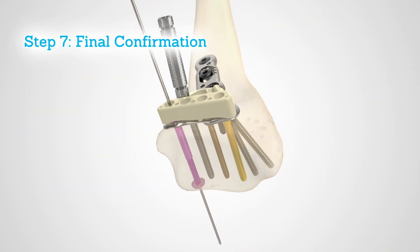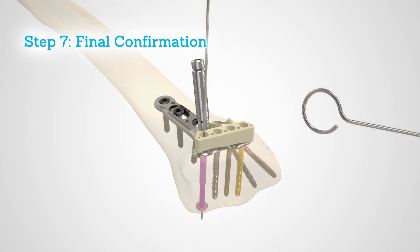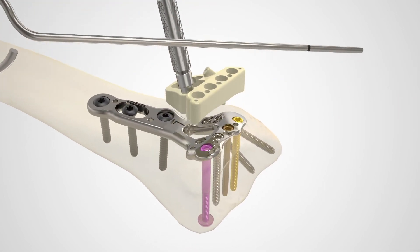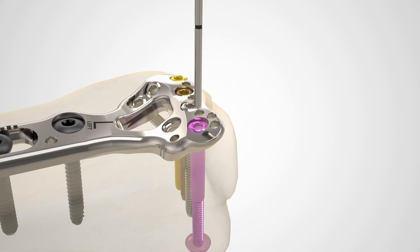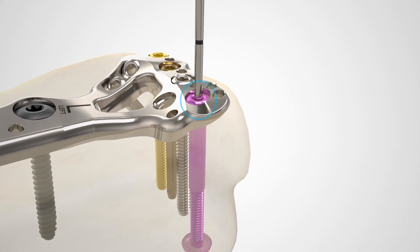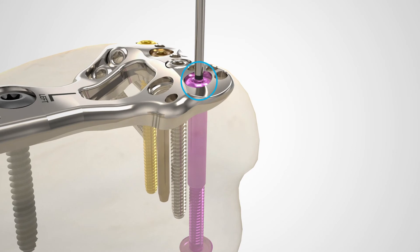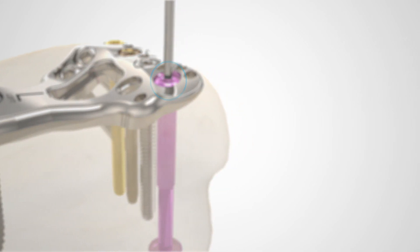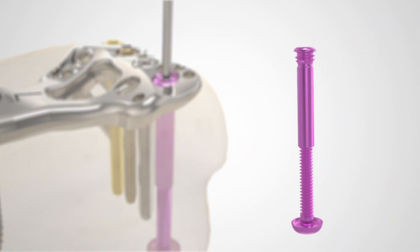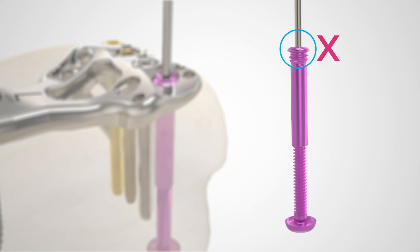Remove the targeting guide and use the FragLock depth gauge to ensure that there is the recommended amount of thread engagement between the FragLock compression screw components. The laser band on the depth gauge should be visible when inserted into the FragLock sleeve. If it is not visible, the FragLock compression screw should be tightened one revolution and then rechecked. Repeat until the laser band is visible.